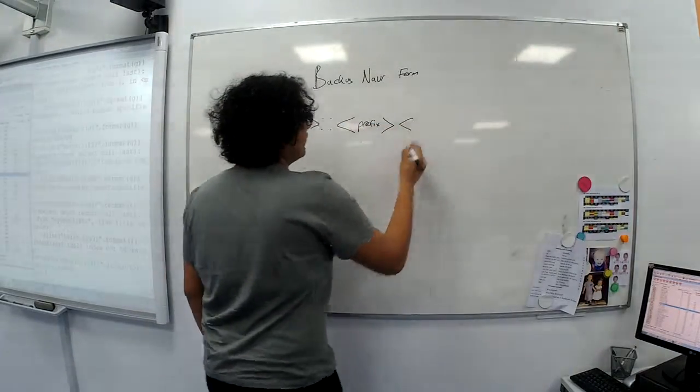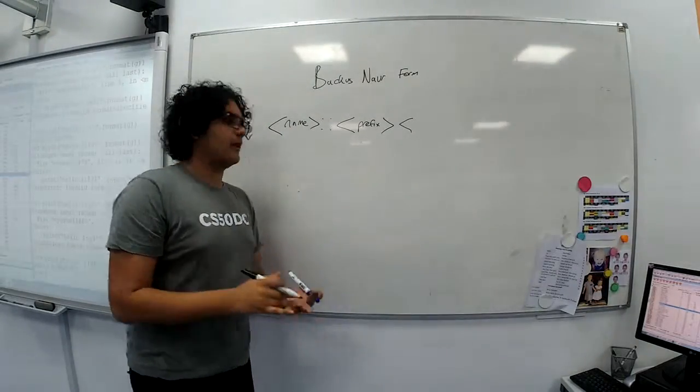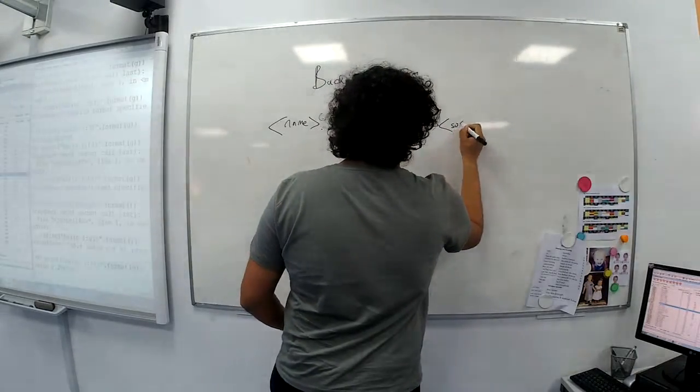It could be a prefix. And then the middle part, we'll just call it the middle part, which includes all the names. So your first name, last name, and any middle names. We'll call it mid for short. And then a suffix.